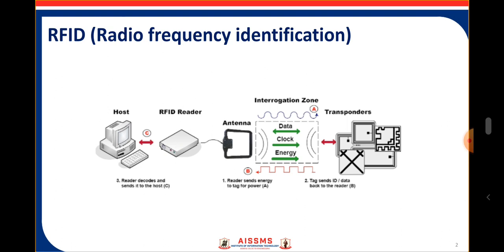RFID methods utilize radio waves to accomplish this. At the simple level, RFID systems consist of three components: an RFID tag or smart label, an RFID reader, and an antenna.